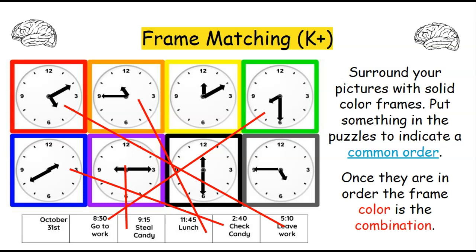This is a frame matching puzzle, appropriate for kindergarten and up. It's a mental puzzle so it works for both digital and physical breakouts. You surround pictures with solid color frames, include something to indicate a common order, and once in order the frame color is the combination. In this example, frames surround different clocks and the common order at the bottom is the times left to right — you match the times with the clocks. This particular example uses decoys, making it more appropriate for third or fourth grade since it requires clock-reading skills.